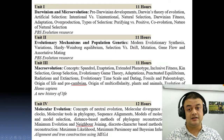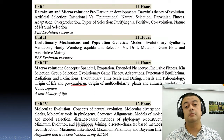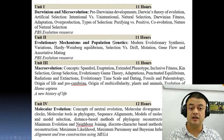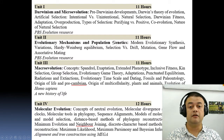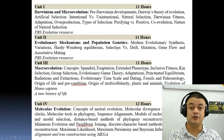The second unit is about evolutionary mechanisms, and we will also cover a little bit of population genetics, including Hardy-Weinberg Equilibrium, genetic drift, mutation, gene flow, and so on.